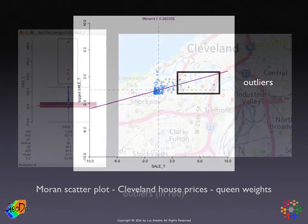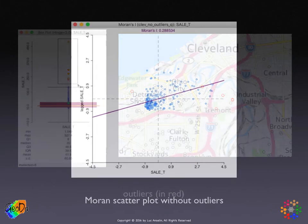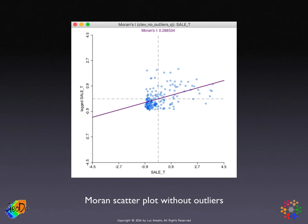As it turns out, these outliers are in an industrial area in Cleveland and really do not fit the rest of the distribution of house sale values. Once we take them out, the resulting scatterplot is much easier to interpret.